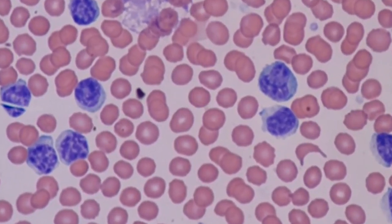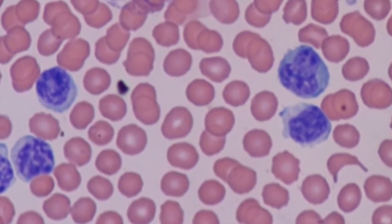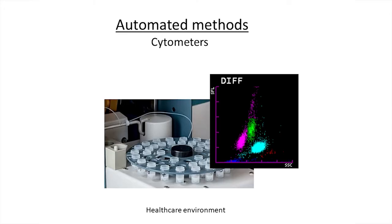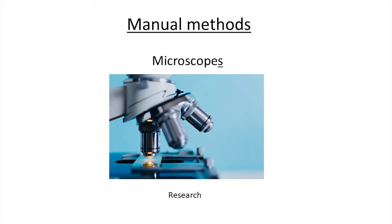The blood cell count is the determination of the number of cells in the blood per unit volume. It can be done by automated methods such as cytometers, which are widely used in the healthcare environment, or by manual methods using the microscope with blood cell counting cameras or hemocytometers, which are widely used in research.